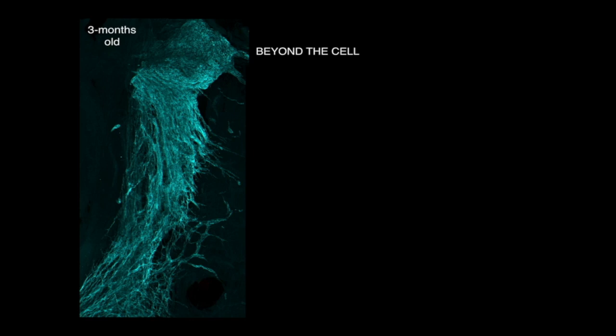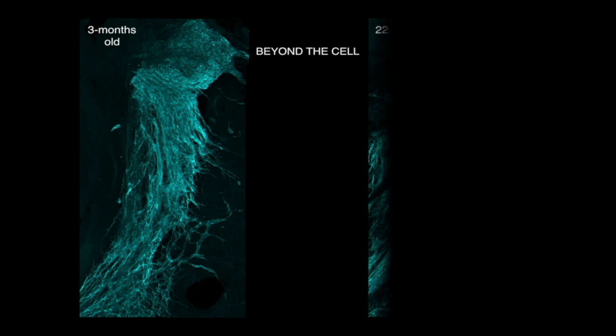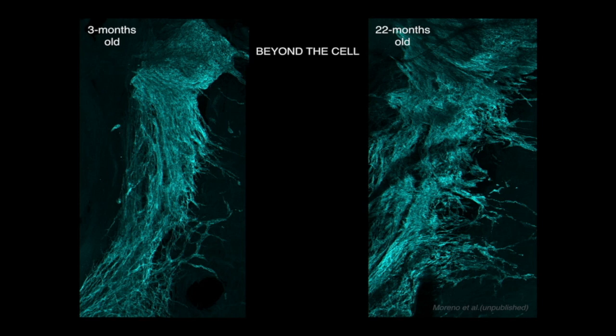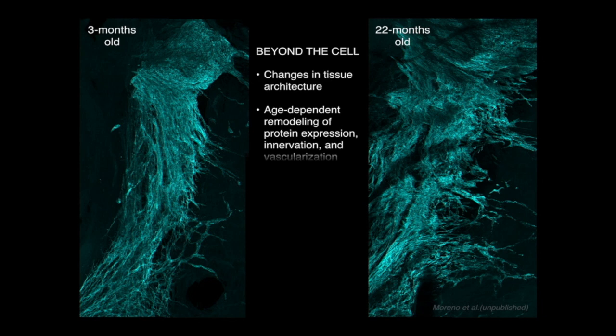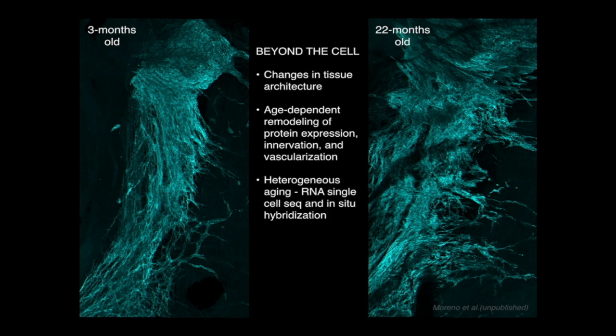We have started to look at what happens to the architecture of the pacemaker. In old pacemakers we have completely lost the nicely packed head, with cells spreading to different places. We are planning to incorporate single-cell sequencing, in-situ hybridization, and other techniques that allow us to see changes in gene expression, protein expression, and also innervation and vascularization of the pacemaker.